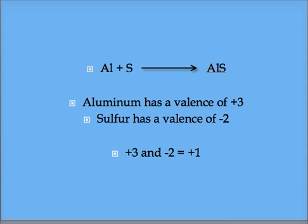Aluminum has a valence of positive three, and sulfur has a valence of negative two. Positive three and negative two yield positive one. This reaction will not work.